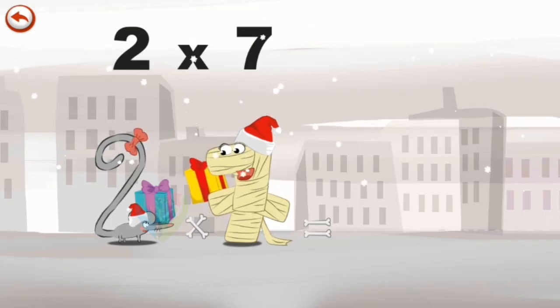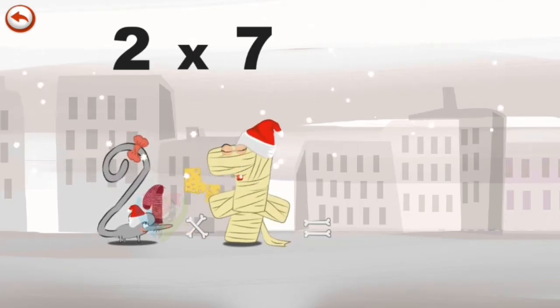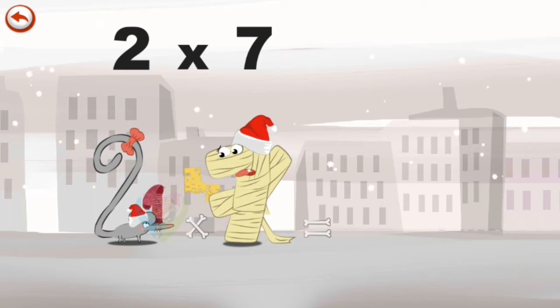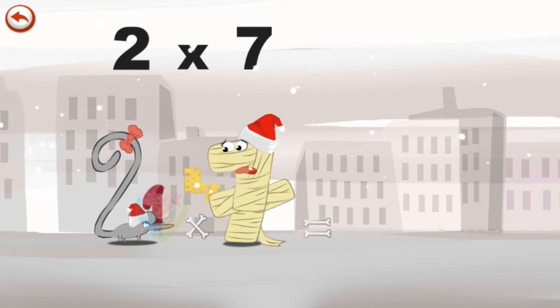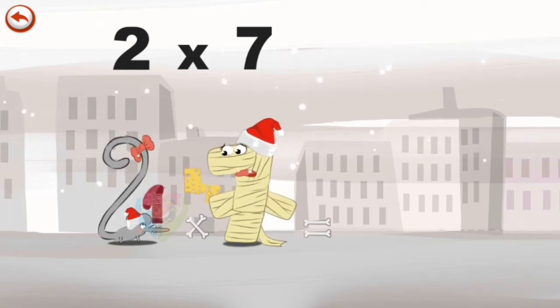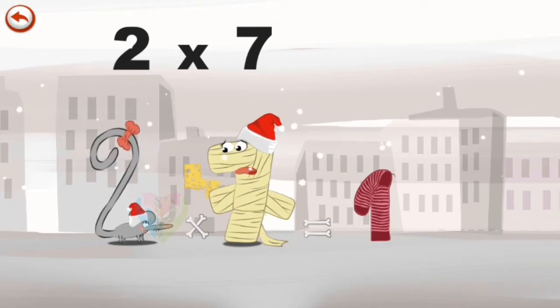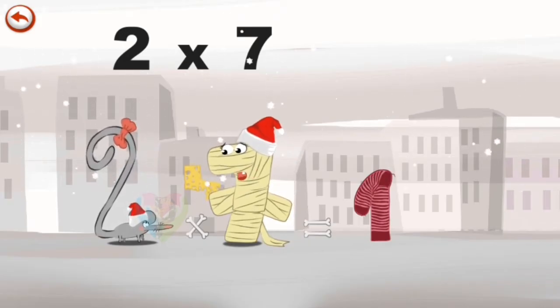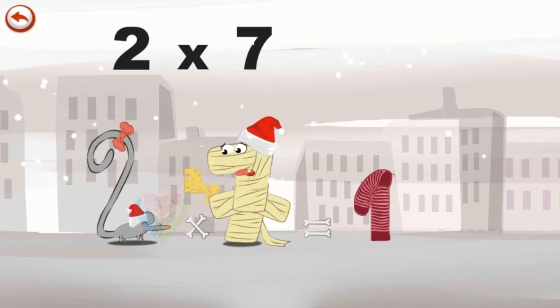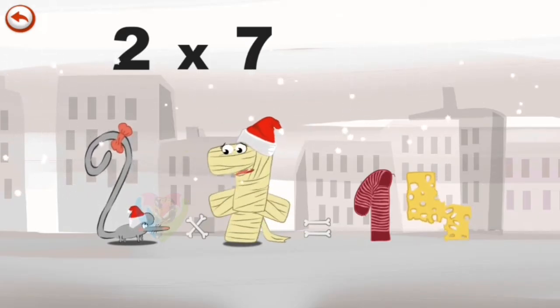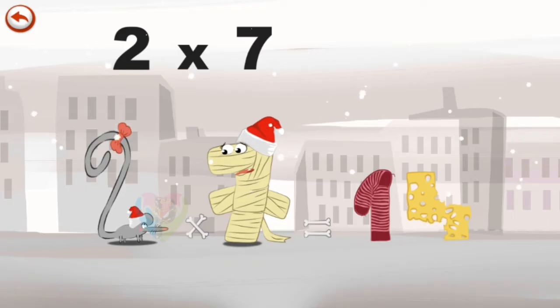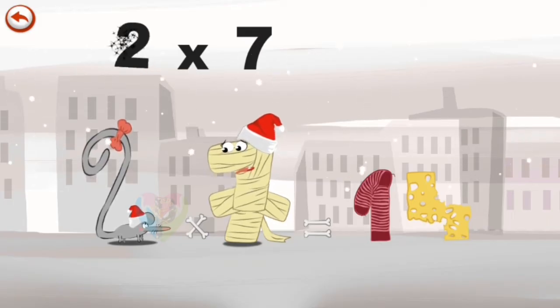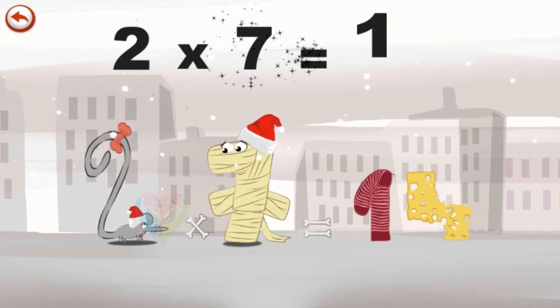They both open their presents, but... Two Squeaks has got a sock in the shape of a 1. She is so disappointed, she throws it away. As for Ram 7, she finds an old piece of cheese in the shape of a 4. She throws it away too. A very Merry Christmas. 2 times 7 is 14.